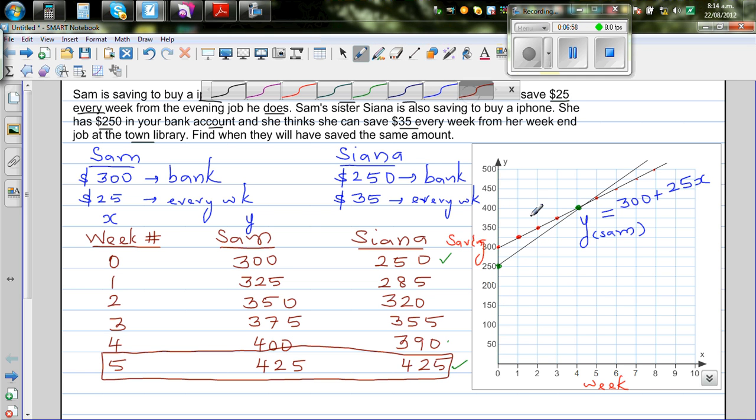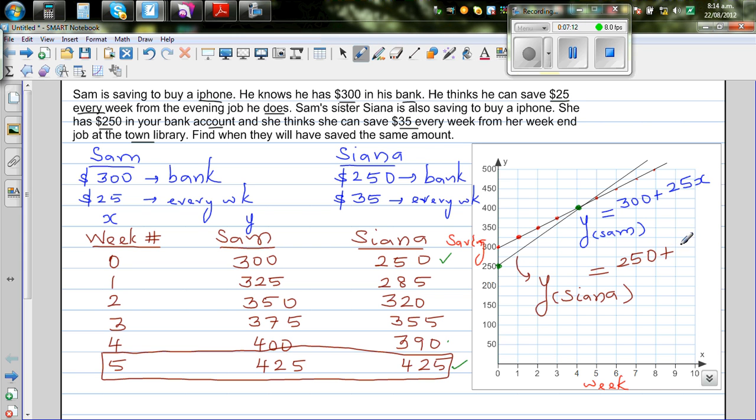The equation for Sienna, Y subscript Sienna, is how much? It starts with 250 and it's increasing at the rate of 35, so it will be 35x where x stands for the number of week and y stands for the saving. These are two ways in which you have solved the equation.